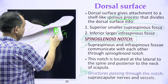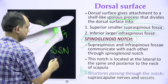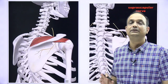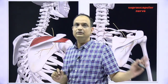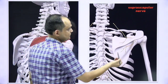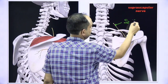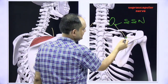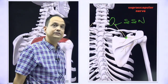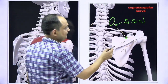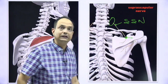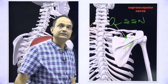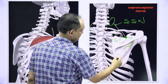Two structures pass through this spinoglenoid notch: the suprascapular nerve and the suprascapular vessels (artery). The suprascapular nerve, after taking origin from the brachial plexus, goes posteriorly and passes through the suprascapular notch on the superior border of the scapula. After passing through that notch, the nerve travels toward the spinoglenoid notch and comes out in the infra-spinous fossa. So the suprascapular nerve enters the infra-spinous fossa through the spinoglenoid notch.